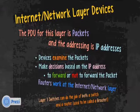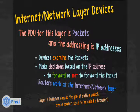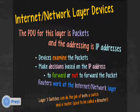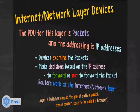Internet network layer devices: the PDU is packets and the addressing is IP addresses. Devices examine the packets and make decisions based on the IP address to forward or not forward the packet. Routers work at the internet/network layer — internet is the TCP/IP term and network is the OSI model term, same layer. Routers find the networks, and what they use to find the networks is IP addresses.